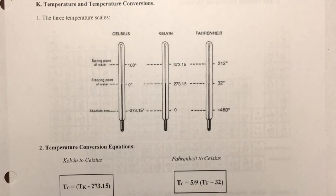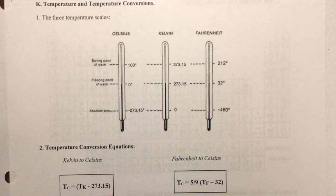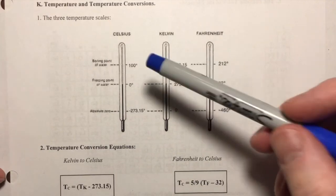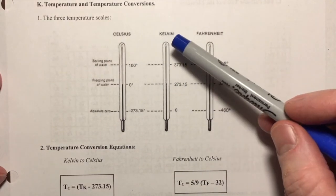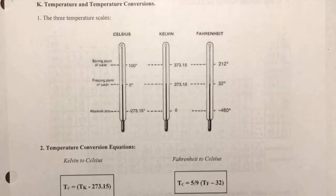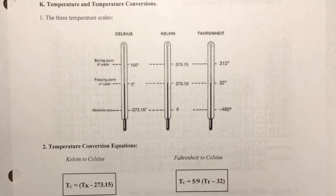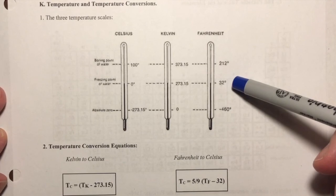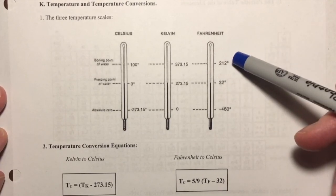In this video I'd like to do a quick review of temperature and doing temperature conversions between the three major temperature scales. We know that the three scales are Celsius, Kelvin, and Fahrenheit. We're going to use mainly Celsius and Kelvin in this class, but you also need to know how to convert from Fahrenheit because that's the temperature scale used mainly for weather.